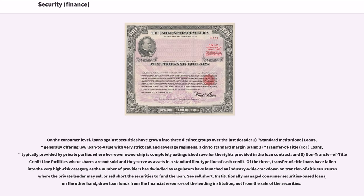On the consumer level, loans against securities have grown into three distinct groups over the last decade: 1. Standard institutional loans, generally offering low loan-to-value with very strict call-and-coverage regimens, akin to standard margin loans. 2. Transfer of title loans, typically provided by private parties where borrower ownership is completely extinguished save for the rights provided in the loan contract. And 3. Non-transfer of title credit line facilities where shares are not sold and they serve as assets in a standard lien type line of cash credit. Of the three, transfer of title loans have fallen into the very high-risk category as the number of providers has dwindled as regulators have launched an industry-wide crackdown on transfer of title structures where the private lender may sell or sell short the securities to fund the loan.